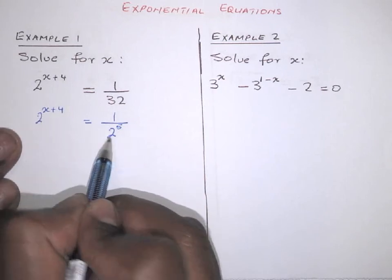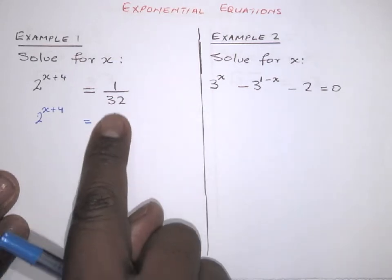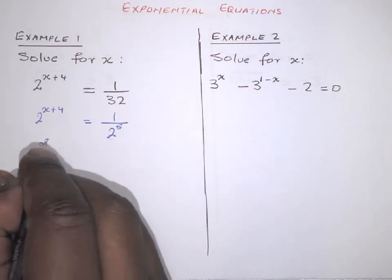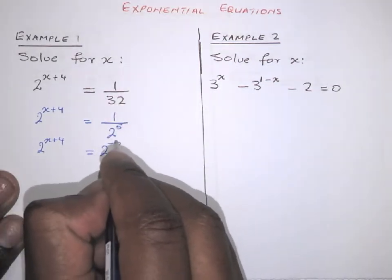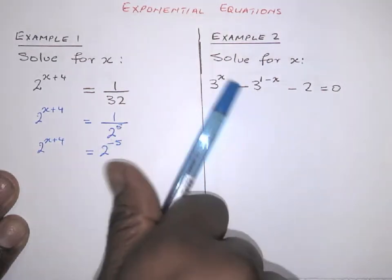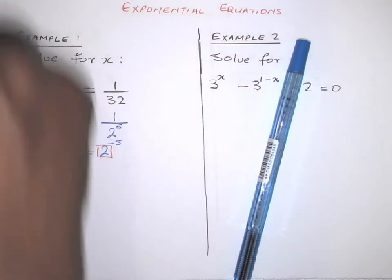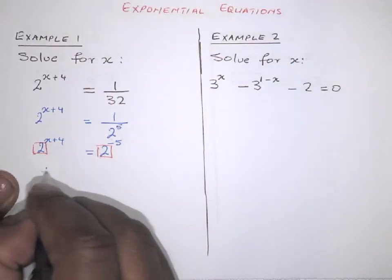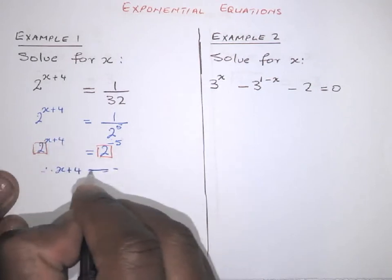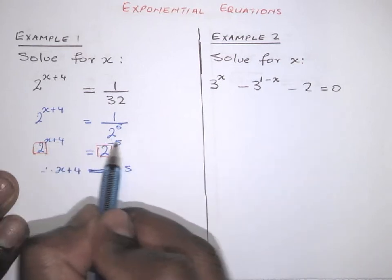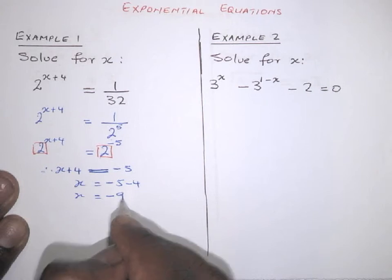Now the base is a prime factor. Make sure the bases are the same — this makes things easier to solve. Since 2^5 is in the denominator, we bring it up and the exponent changes sign, giving 2^(x+4) = 2^(−5). The bases are the same, so we drop them and set x + 4 = −5, therefore x = −9.